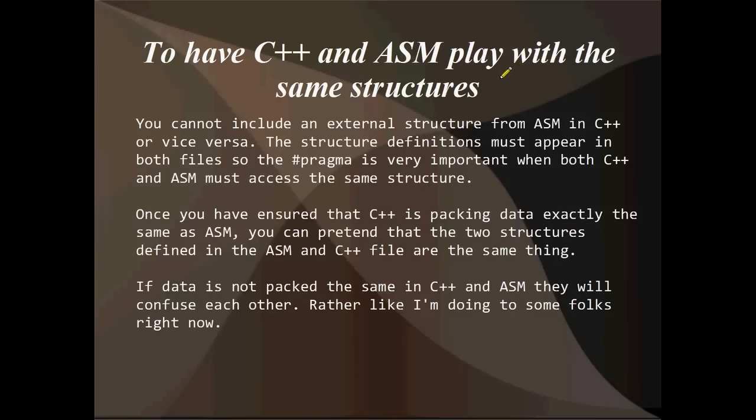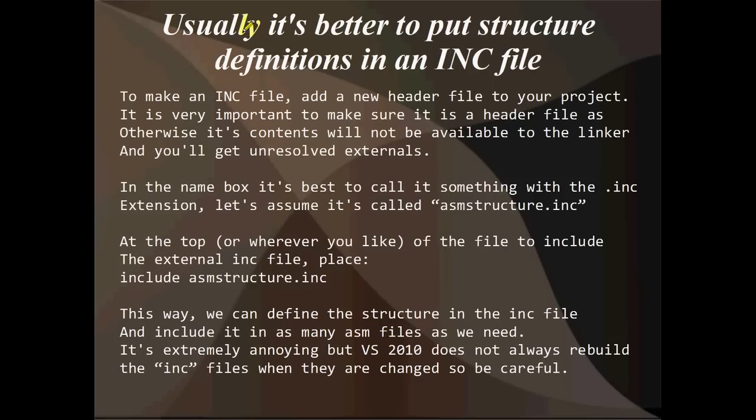Okay, so to have C++ and assembly play with the same structures, you can't include an external structure from assembly in C++ or vice versa. It doesn't work like procedures. But you can't do that with structures. So the first thing that you've got to do is use pragma to ensure that the structure definitions in C++ and the structure definition in assembly are packing the data exactly the same. Once you've ensured that C++ is packing the data exactly the same as assembly, you can pretend that the two structures defined in the assembly and the C++ are actually the same thing. If the data is not packed the same, we get lots and lots of trouble. It just doesn't work, quite frankly.